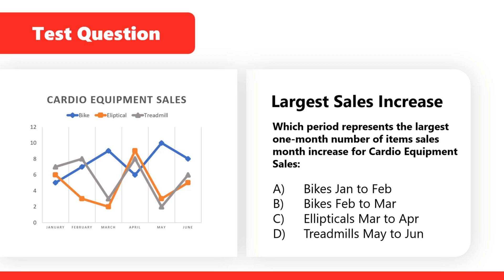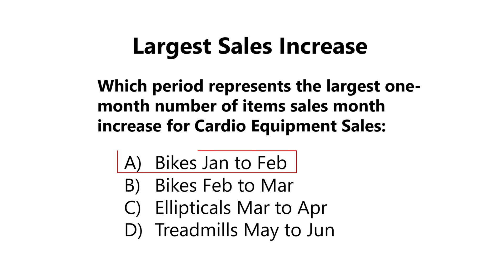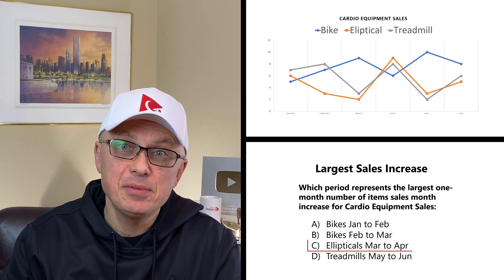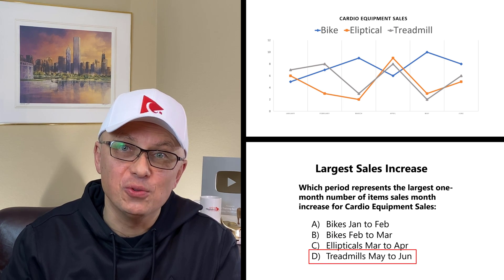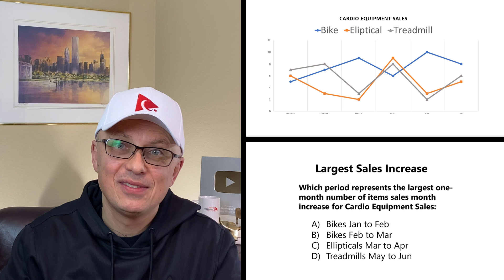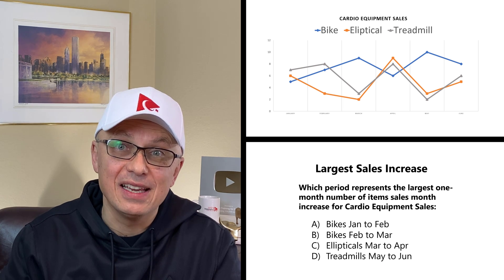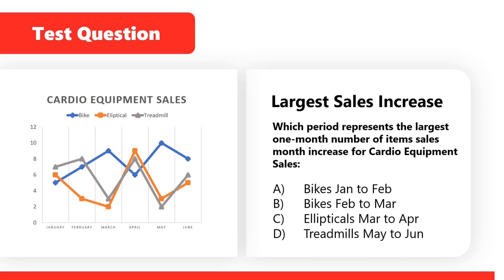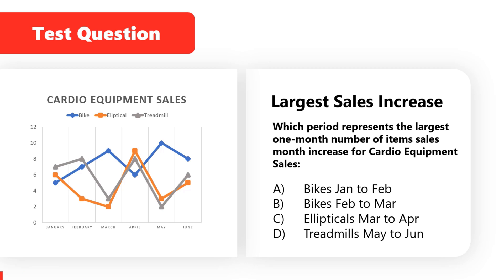You have 4 different choices: choice A — bikes from January to February; choice B — bikes from February to March; choice C — ellipticals March to April; and choice D — treadmill May to June. Give yourself 5 to 10 seconds to see if you can come up with the right solution. We're going to move forward and cover the answer for this problem and get to the solution together.